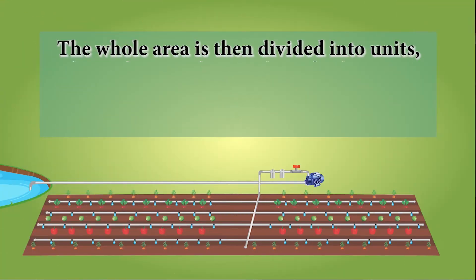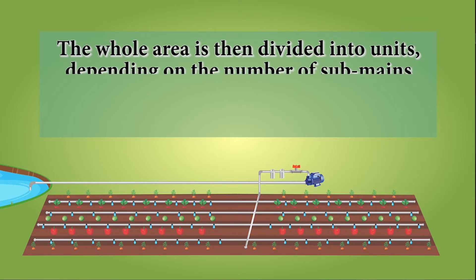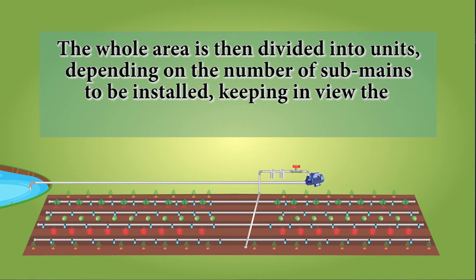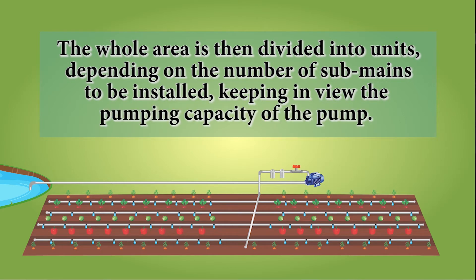Farm data also includes the topography map of a farm showing the area to be irrigated. The whole area is then divided into units depending on the number of sub-mains to be installed, keeping in view the pumping capacity of the pump.